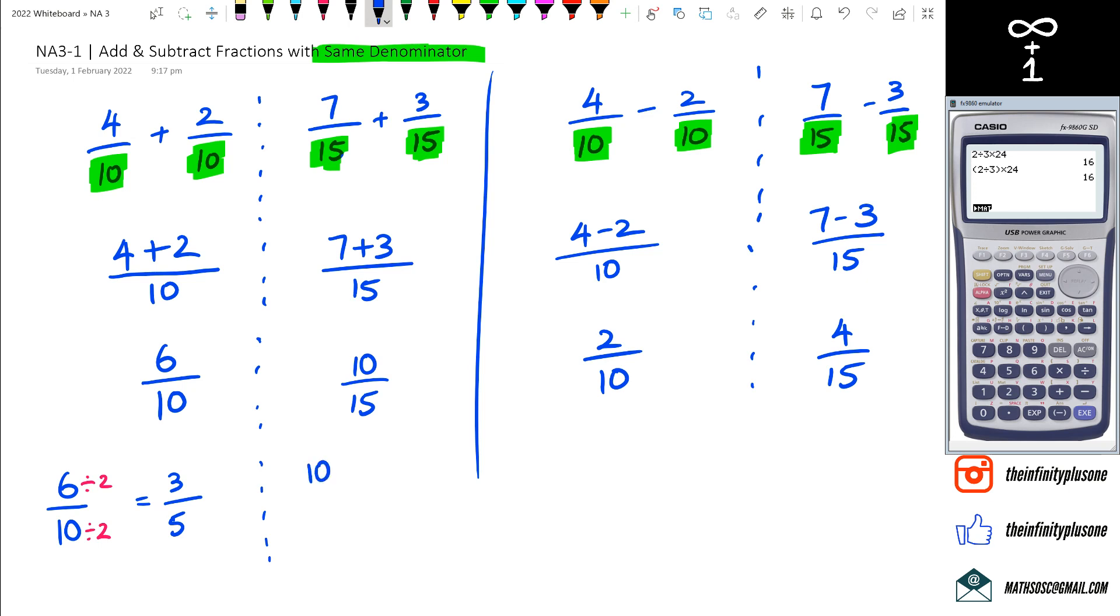And as for the 10 over 15, I can divide both of these numbers by 5. And how do I know that so quickly? Because of my times tables. It's really important that you guys learn your times tables. So 10 divided by 5 is 2, 15 divided by 5 is 3. And same with that 2 over 10, I know that 2 is a number that I can divide with both of those numbers, which means 2 divided by 2 is 1 and then 10 divided by 2 is actually 5.